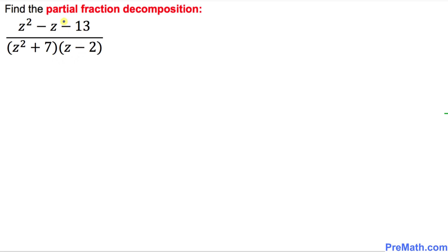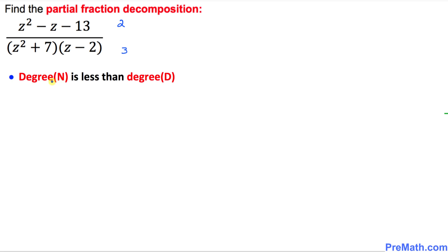Before we go any further, let's look at the numerator. The highest degree is 2. And if we multiply the denominator part, the highest degree is going to be 3. Now let's go over the basic checklist. As we can see, the degree in the numerator is indeed less than the degree in the denominator — it is 2 on top and 3 at the denominator.